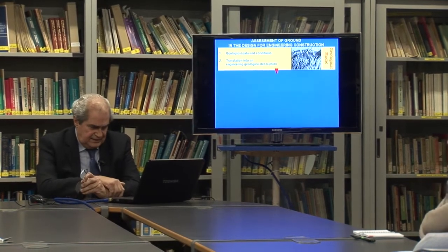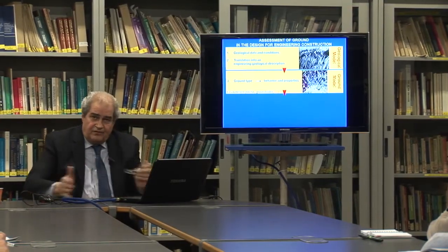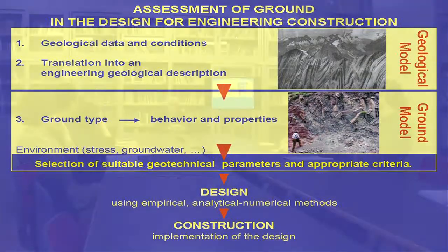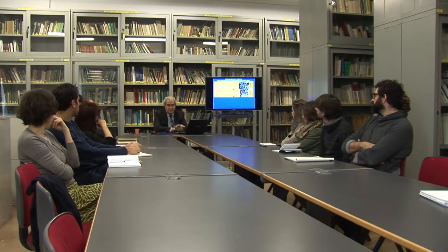It means we collect geological data and conditions, then translate them into an engineering geological description. Going from the forest to the tree gives us the ground model. We have to define the ground type, which means properties. To get properties, we must understand the behavior of the ground mass under construction conditions, associated with environmental conditions, in-situ stresses, and groundwater.